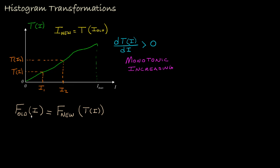What this expression tells us is that the proportion of pixels that have an intensity less than or equal to I in our original image will be equal to the proportion of pixels in the new image that have an intensity less than or equal to the transformed intensity I. That happens because of this monotonic property — if an original intensity is bigger than another intensity, then the transformation of that intensity will be bigger than the transformation of that other intensity.